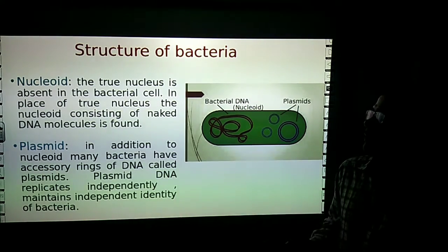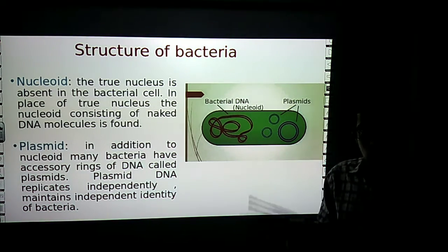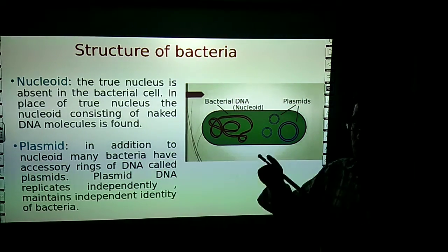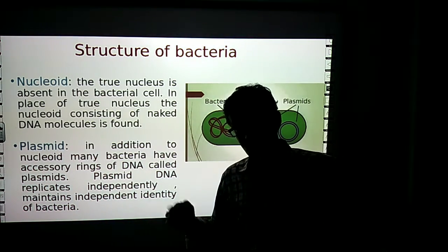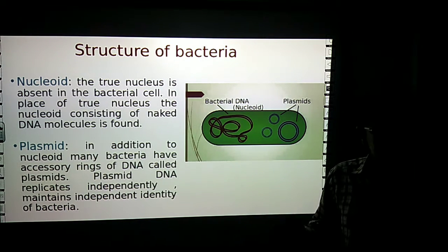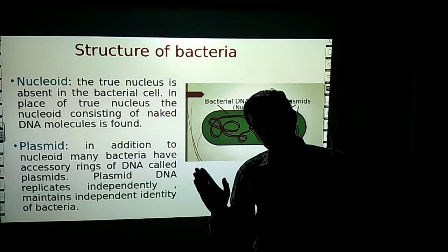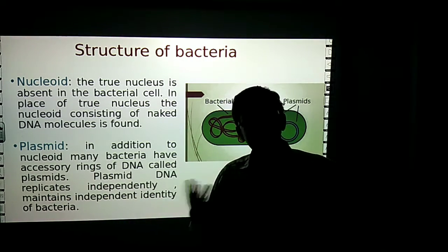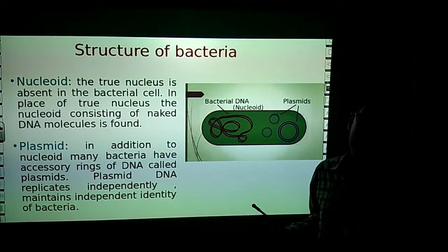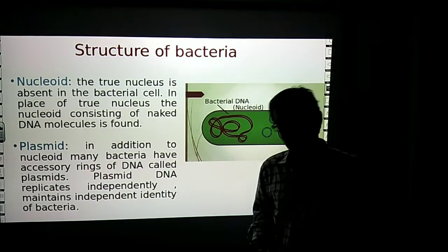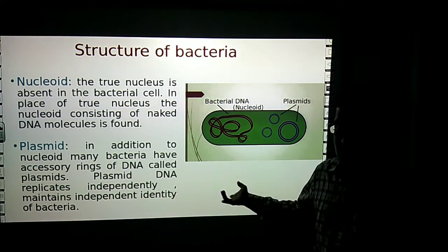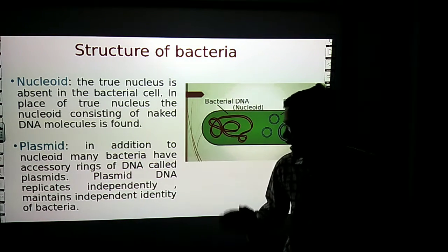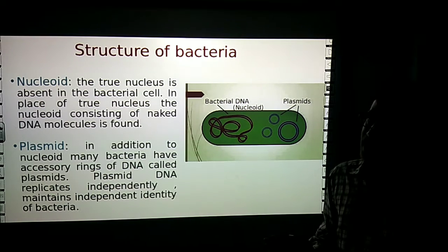In addition to the nucleoid, many bacteria have accessory rings of DNA called plasmids — circular structures where DNA is found. Plasmid DNA replicates independently. The key function of DNA is replication — forming the same type of DNA. This property is the reason bacteria replicate, divide, and develop new bacterial cells. Plasmid DNA replicates independently and maintains the independent identity of bacteria.